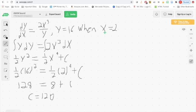Now, we bring back our original form. I'm going to move over to the right-hand side here. We have 1 half y squared equals 1 half x to the fourth, plus c. And we have found c to be 120.